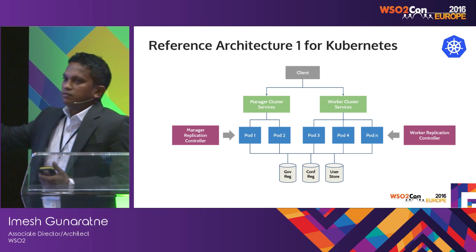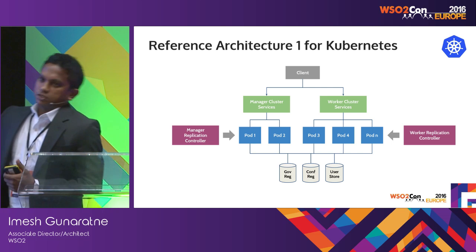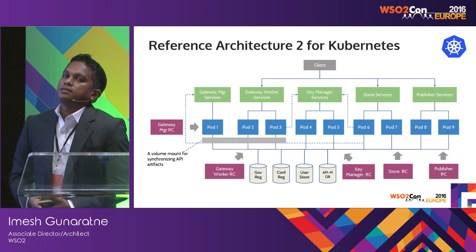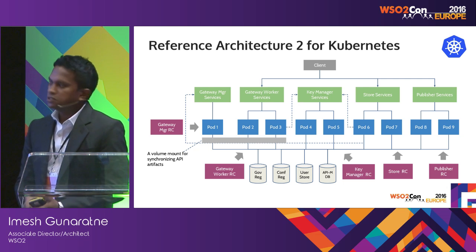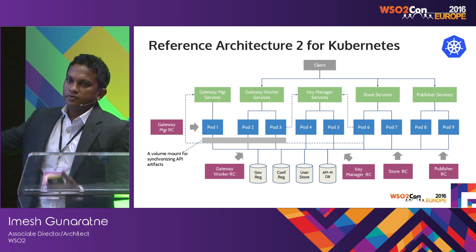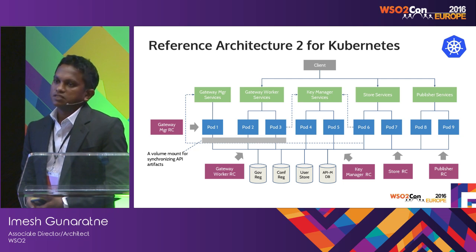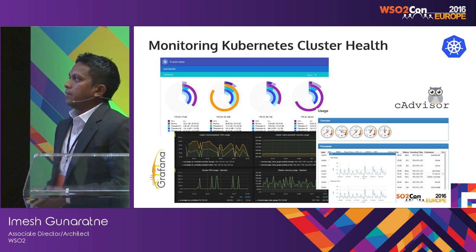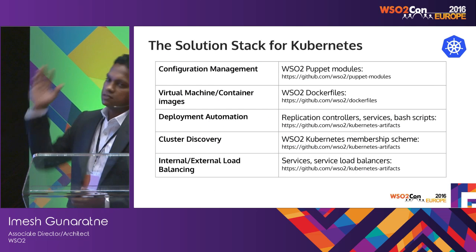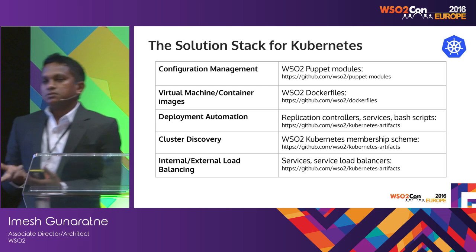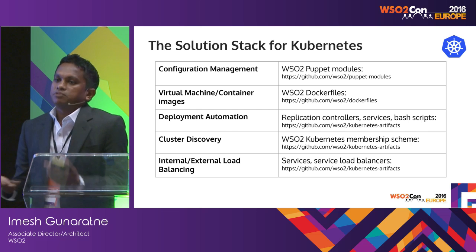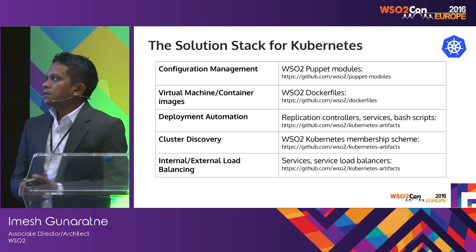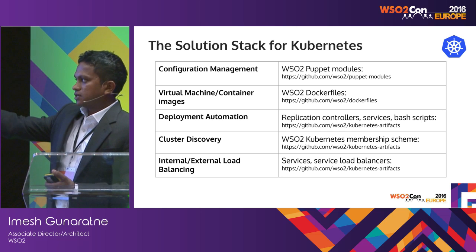For the manager, we have a separate cluster, and the workers have another cluster. Pods are managed by replication controllers, and load balancing is done by services. For deploying a complex application such as API Manager, which has seven sub-clusters, we use the same approach and create replication controllers and services. We have already released these artifacts — if you go to github.com/WSO2 and search for Kubernetes, you will find the repository. Kubernetes provides UIs to manage and monitor the deployment. For building Docker images, we provide Dockerfiles, and we use Puppet to manage configurations efficiently rather than duplicating configuration files.